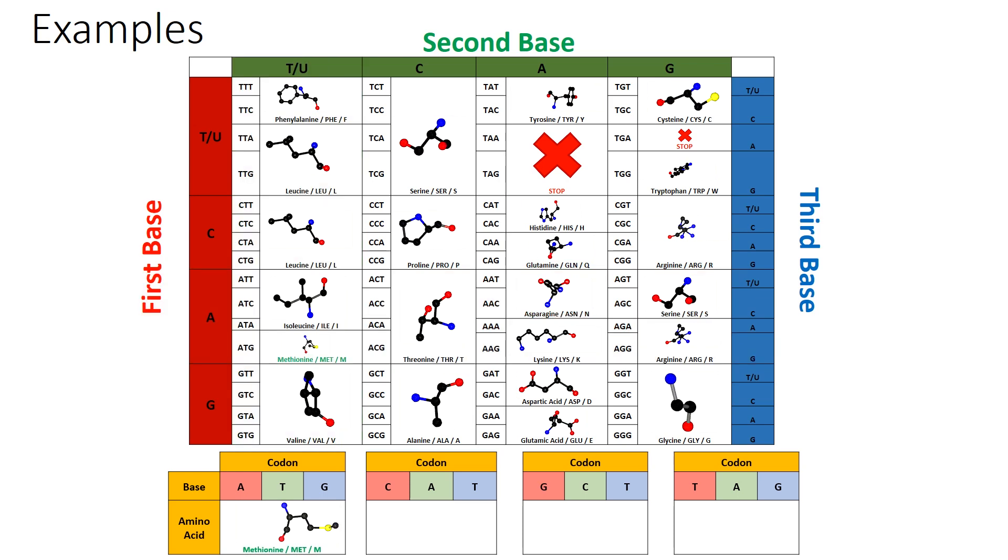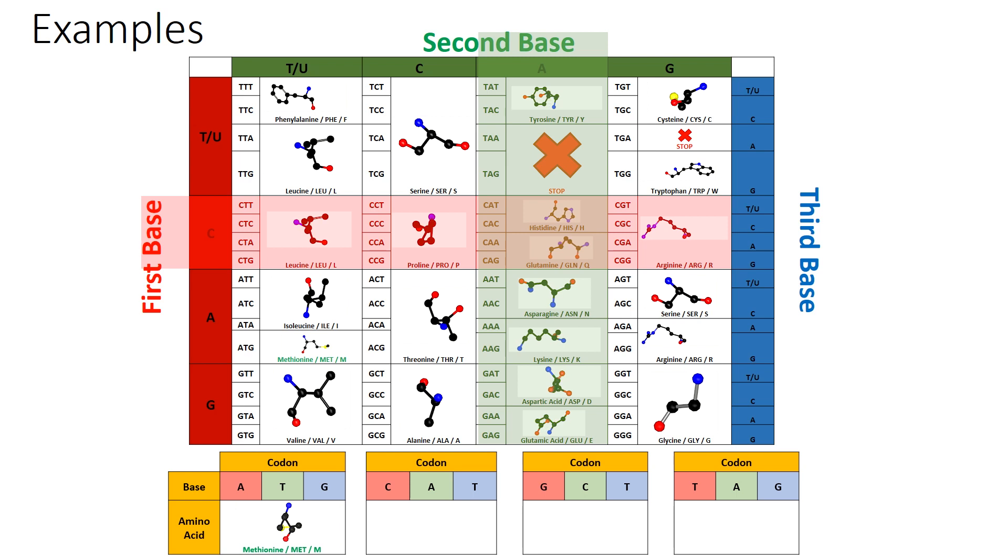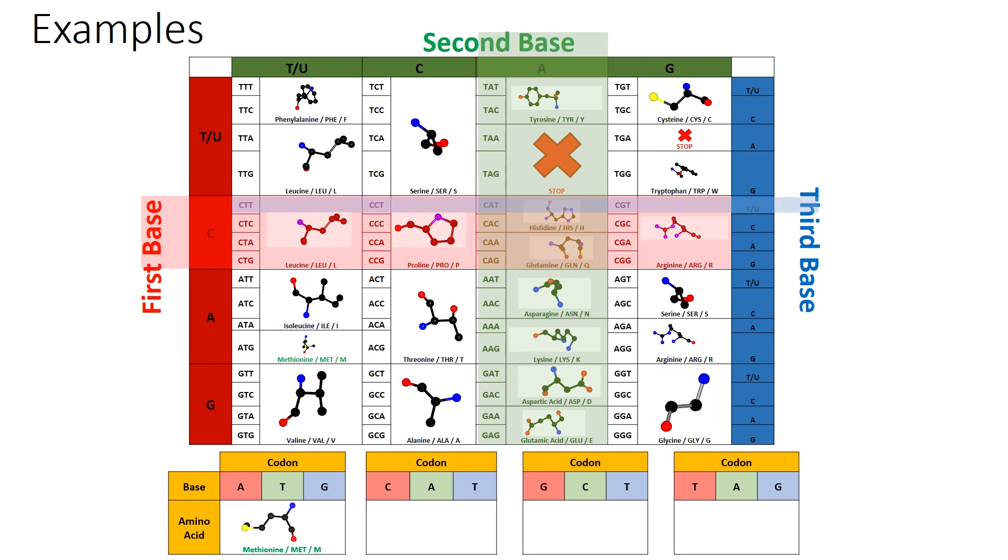If we follow the same system for the codon C, A, T, we get to the amino acid histidine.